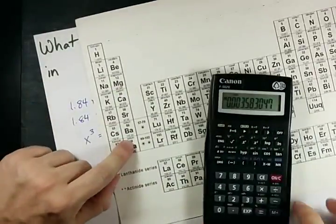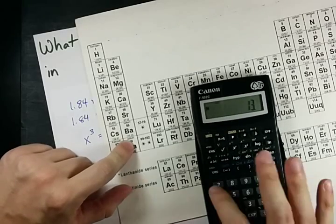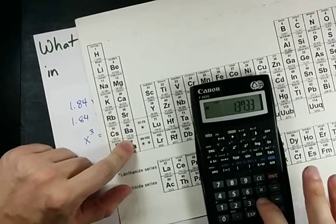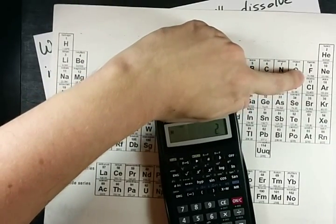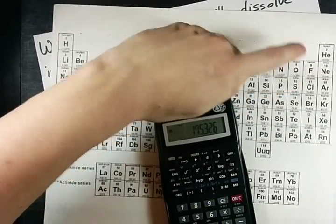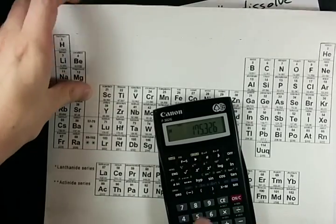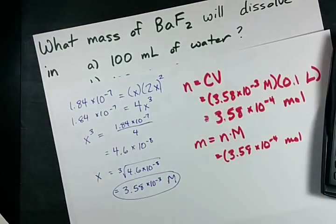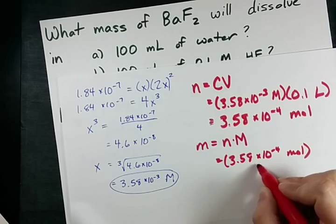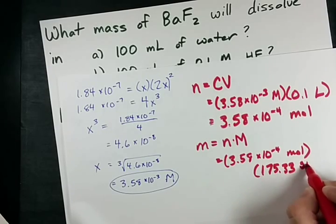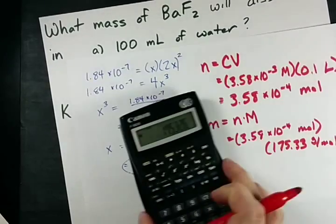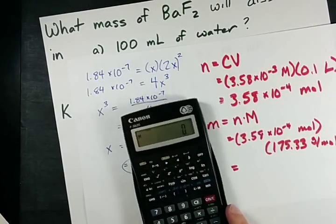The molar mass of BaF2 is 137.33 plus 2 times the molar mass of fluorine, which apparently gives me a total molar mass of 175.33, 175.33 grams per mole. Now I got to multiply those.